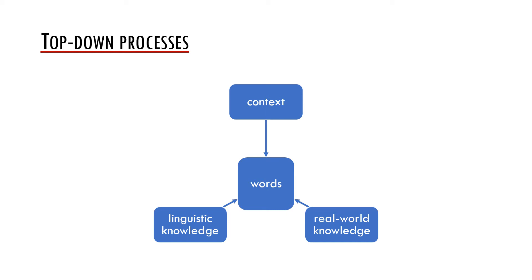Third, our real-world knowledge helps a lot in word recognition. For example, based on our real-world knowledge, we know that certain things are plausible and other things implausible. These three sources of information can of course interact with each other.